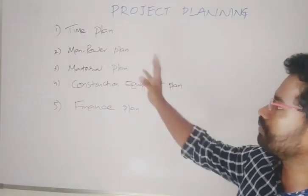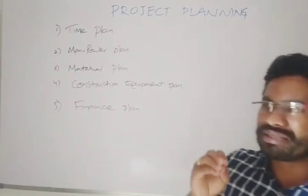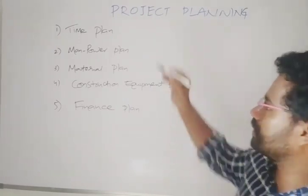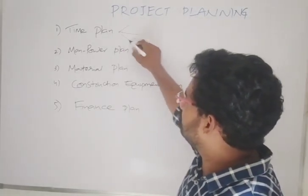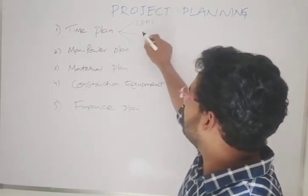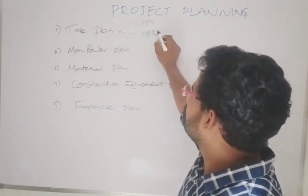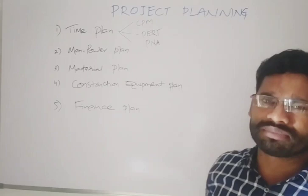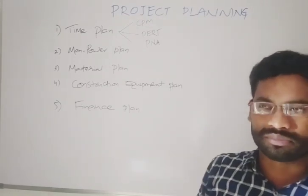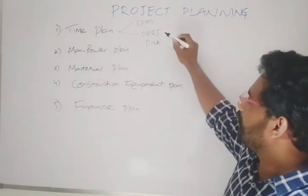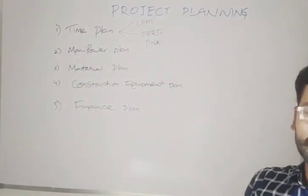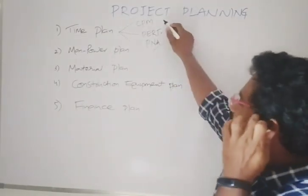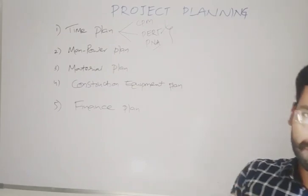Based on the time plan, there are some methods — you already know these from your previous class. There are three methods: the first one is CPM, the Critical Path Method; PERT, Program Evaluation Review Technique; and PNA, Precedence Network Analysis. Using these methods, you find out how much time is required for the completion of the project.